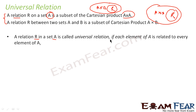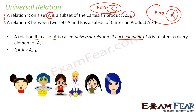A relation R on set A is called a universal relation if each element of A is related to every element — that means all the elements of A cross A satisfy the criteria.